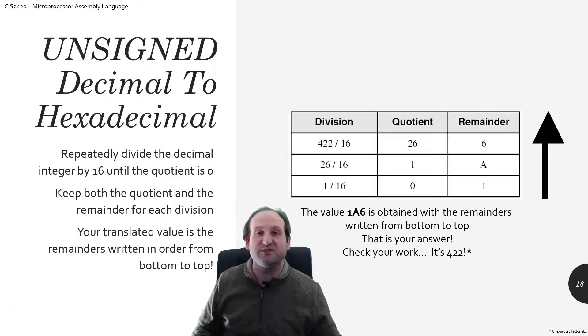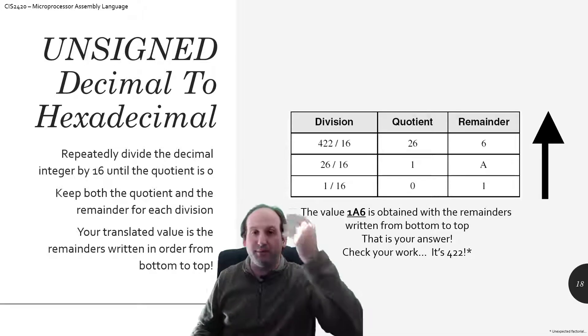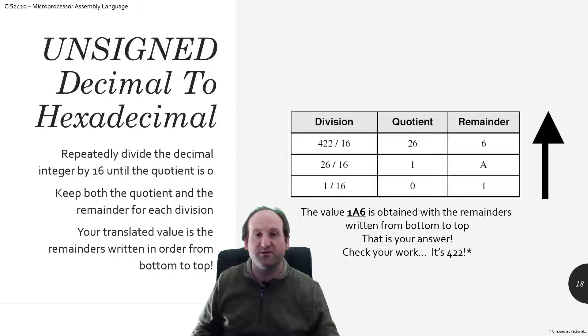So then what we do is we've done all the math, and now we just have to look at the remainders, and we write them left to right as we go back up on the chart. So the 1 goes first, then the A, then the 6, so 1A6 is the answer to the hexadecimal conversion of 422. And if you want to look at a different video, you can take 422 and work its way back into hexadecimal, or another video, in a couple slides here, and you can see that this is the correct answer.